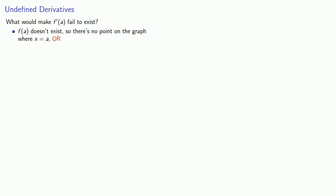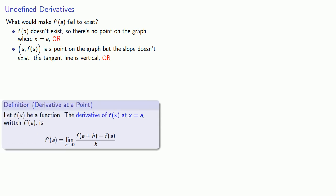a point on the graph, but the slope of the tangent line doesn't exist. And if the slope of the tangent line doesn't exist, that means the tangent line is vertical.